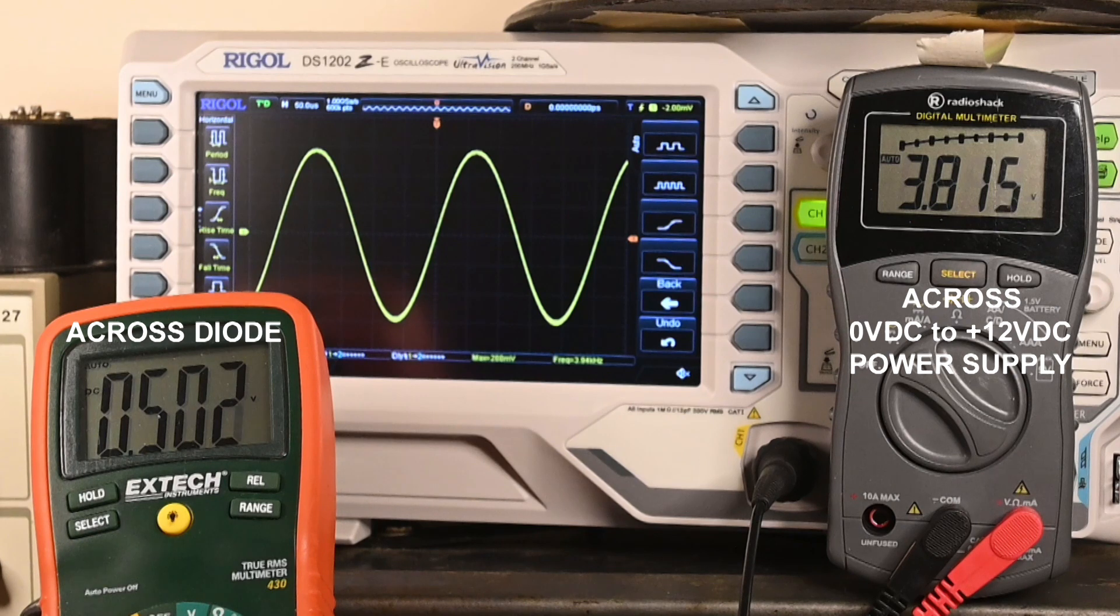Now I'm going to continue to go up, and we'll take a look at that sine wave. And we don't hardly notice any change in that sine wave as I increase the voltage across the entire circuit. We're almost 7, there we go, 7 volts.